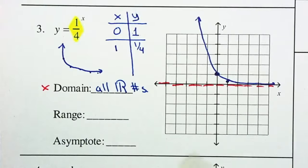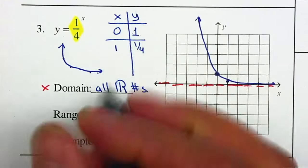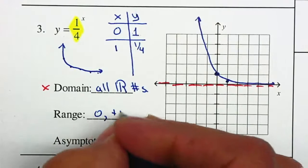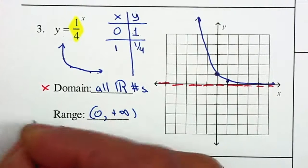Your range. At what point do I start seeing a graph? I start seeing a graph at 0 all the way to positive infinity. So from 0 to positive infinity. Remember, your range are your y values.